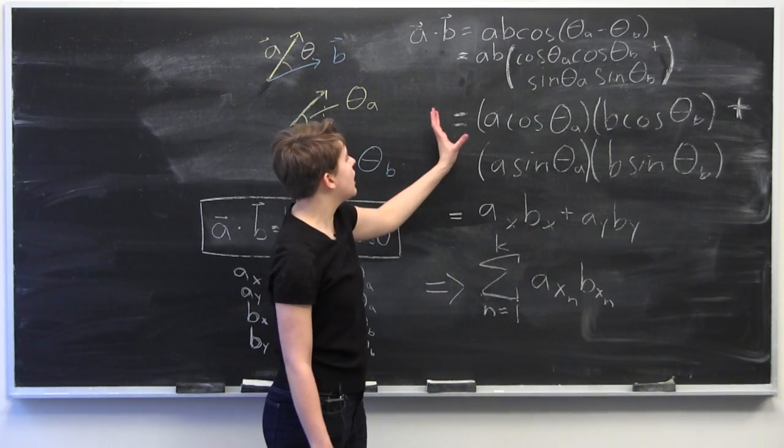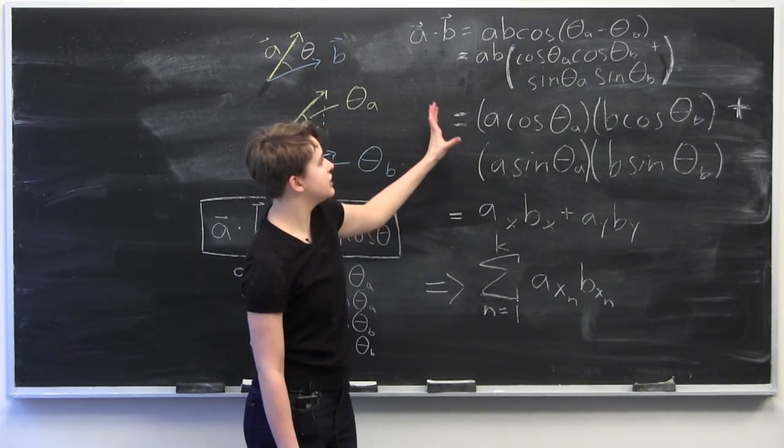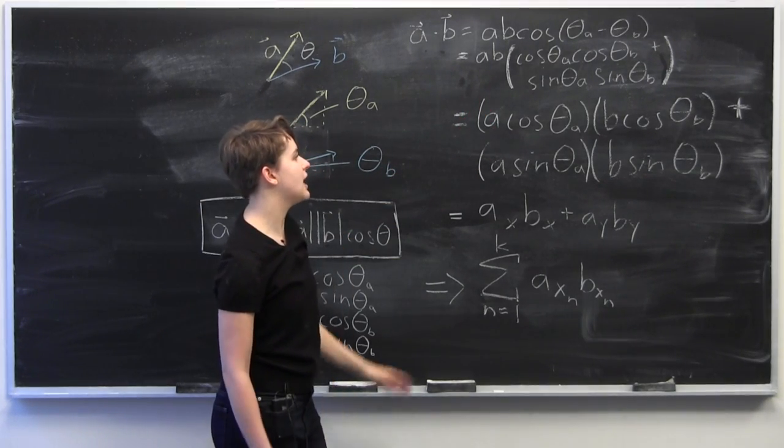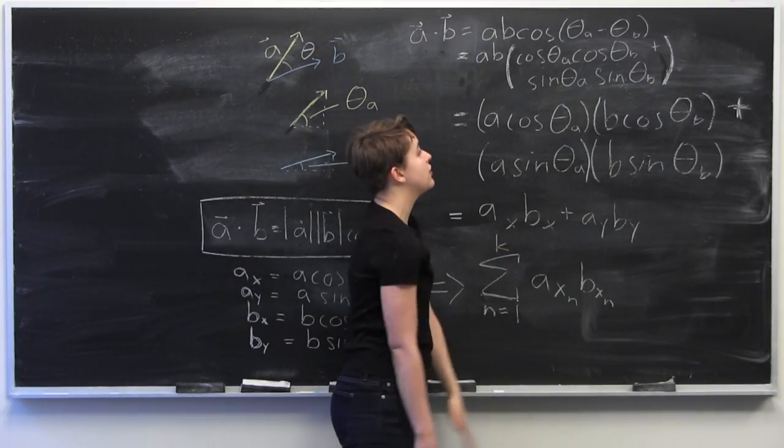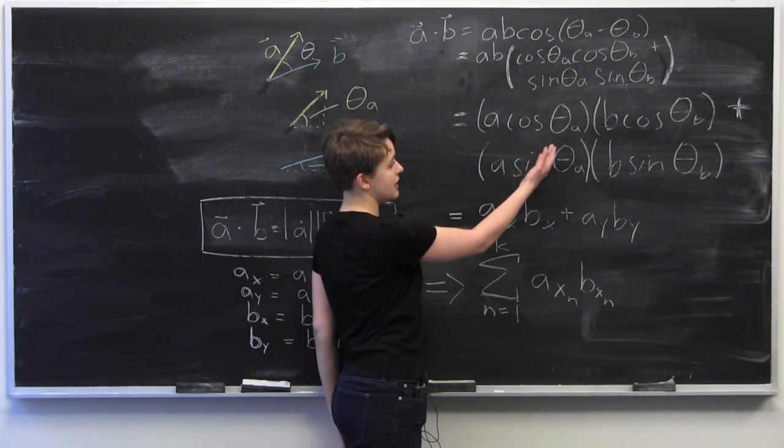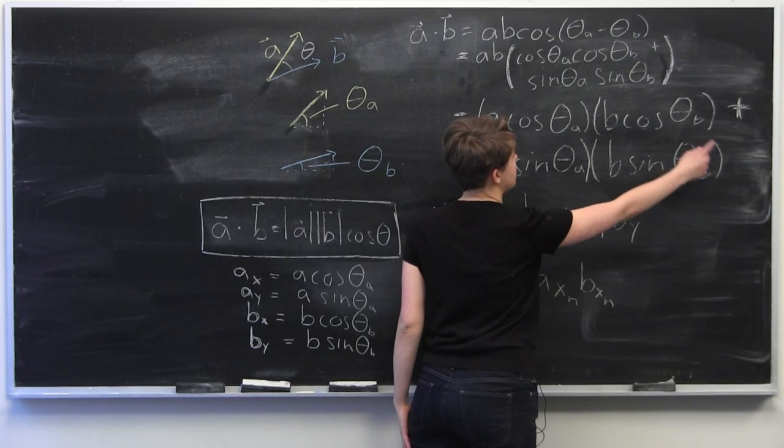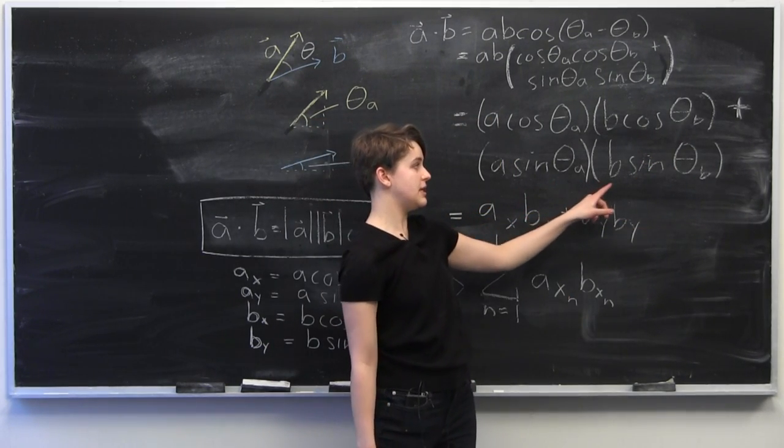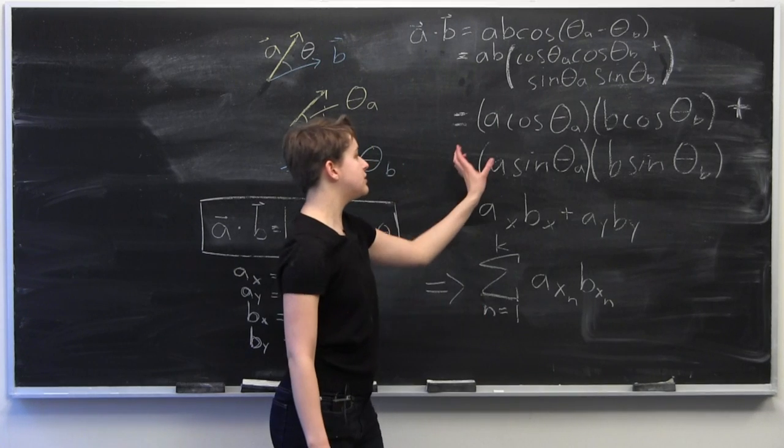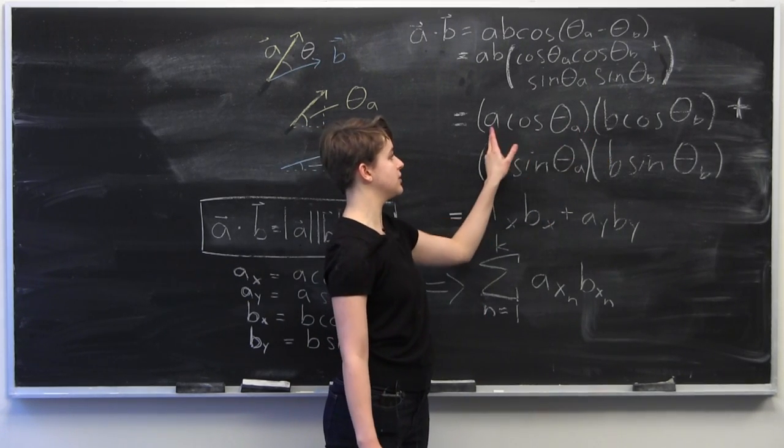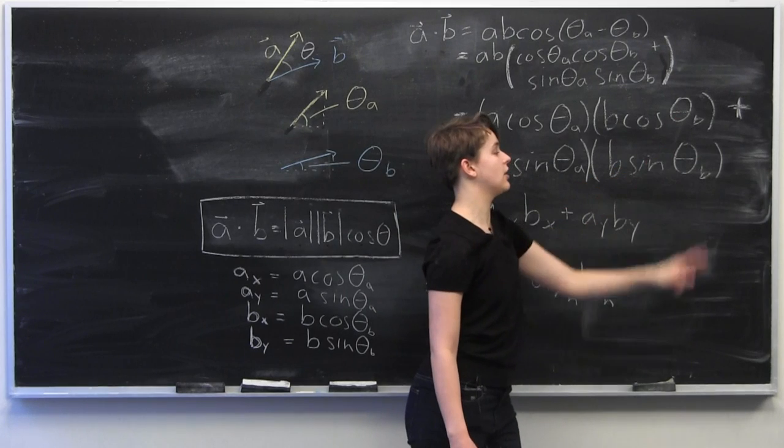Now I did two steps here at once. I distributed out the a, b in front of both of the cosine and sine terms, and I grouped them according to variables. So what I have is a times cosine of theta_a times b cosine theta_b plus a sine theta_a times b sine theta_b. You see here I have the cosines grouped together, and I have the variables, the corresponding variables a and a here, and b and b here all grouped together.